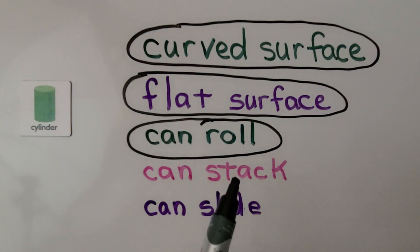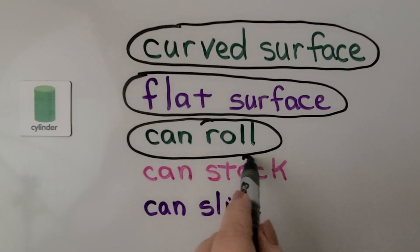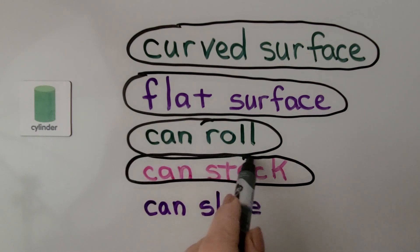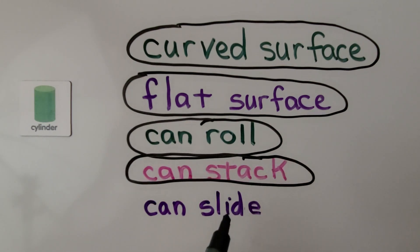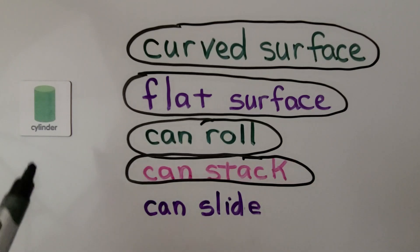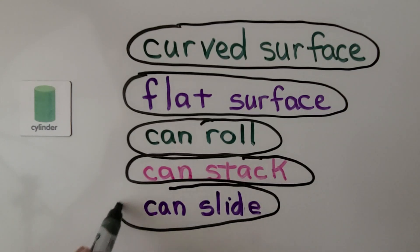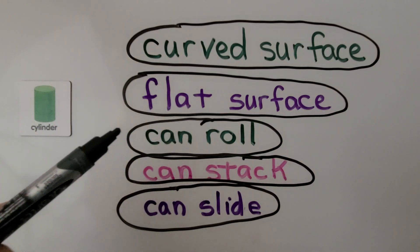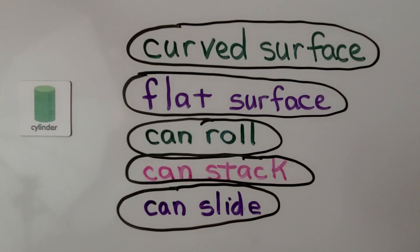This says can stack — can we stack cylinders to make a tower? If you said yes, you're right. We can stack them to make a tower, so we can circle can stack. This says can slide — can we slide a cylinder? Yes, we can slide a cylinder on one of its flat surfaces, so we can circle can slide. All of these words describe cylinders: curved surface, flat surface, can roll, can stack, can slide. It's all of them.